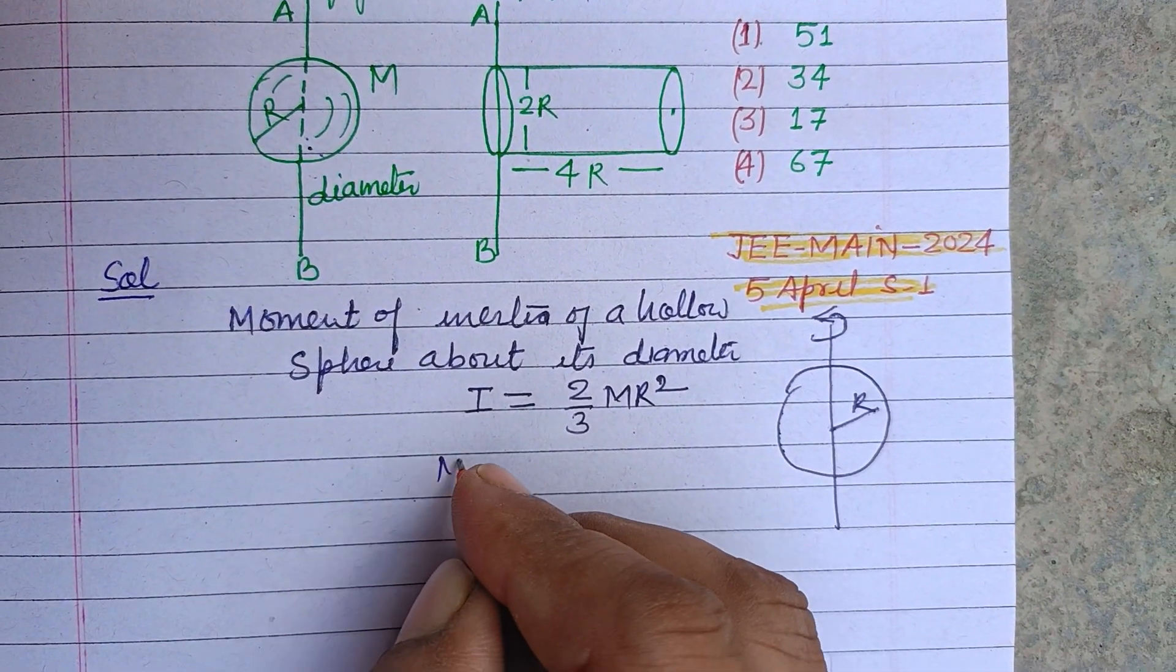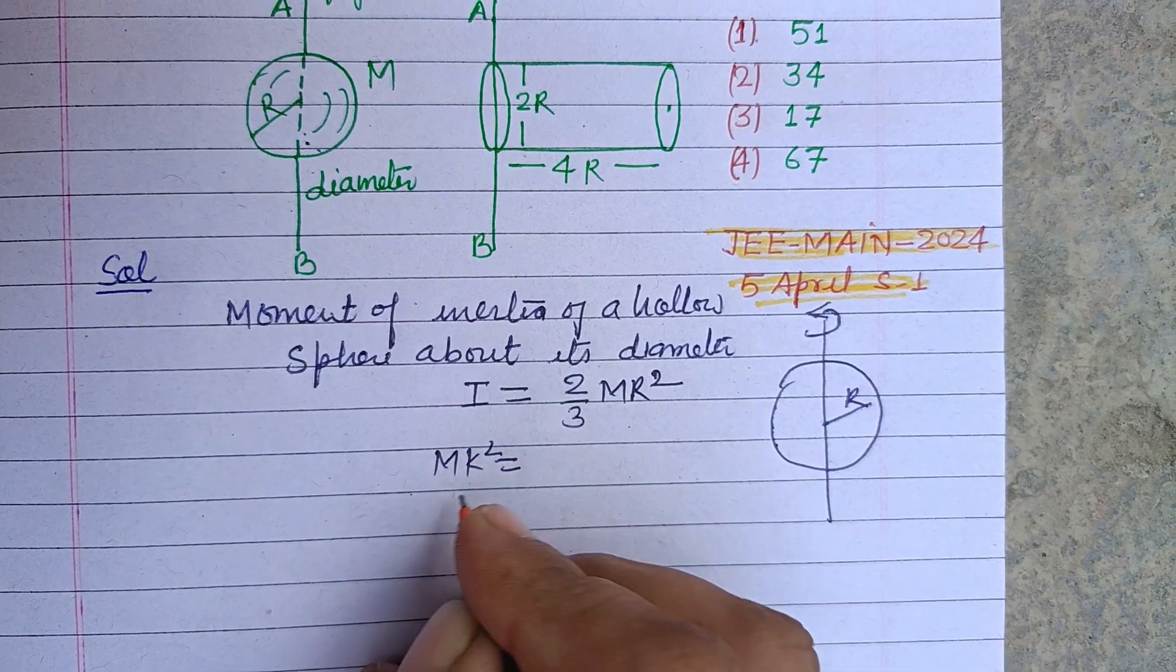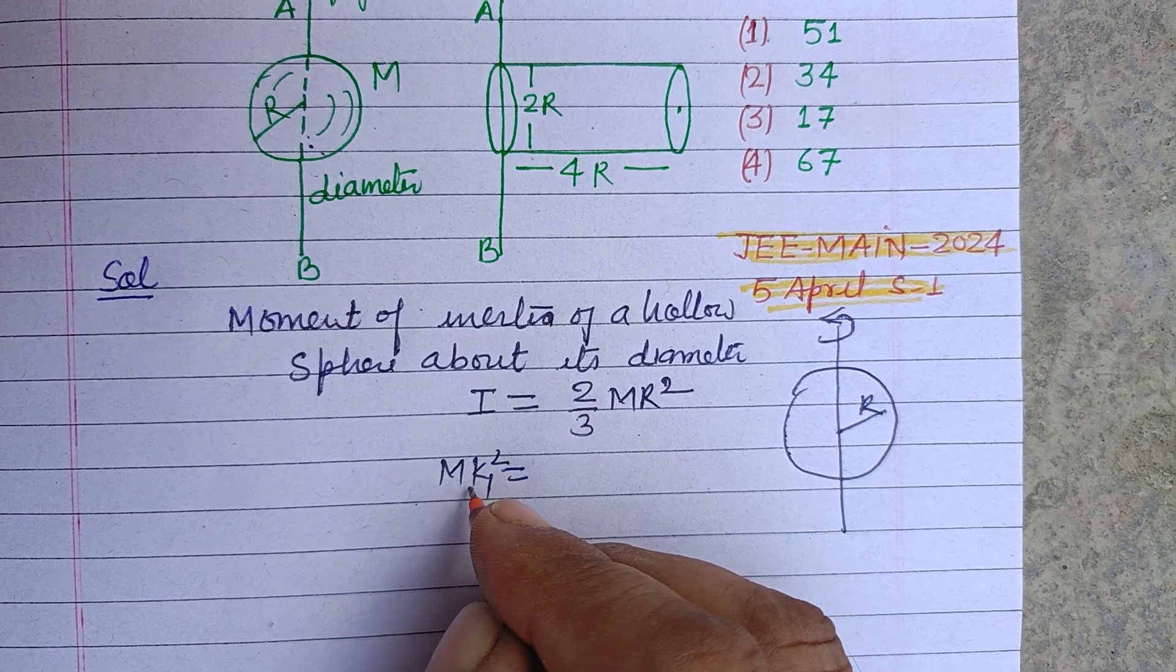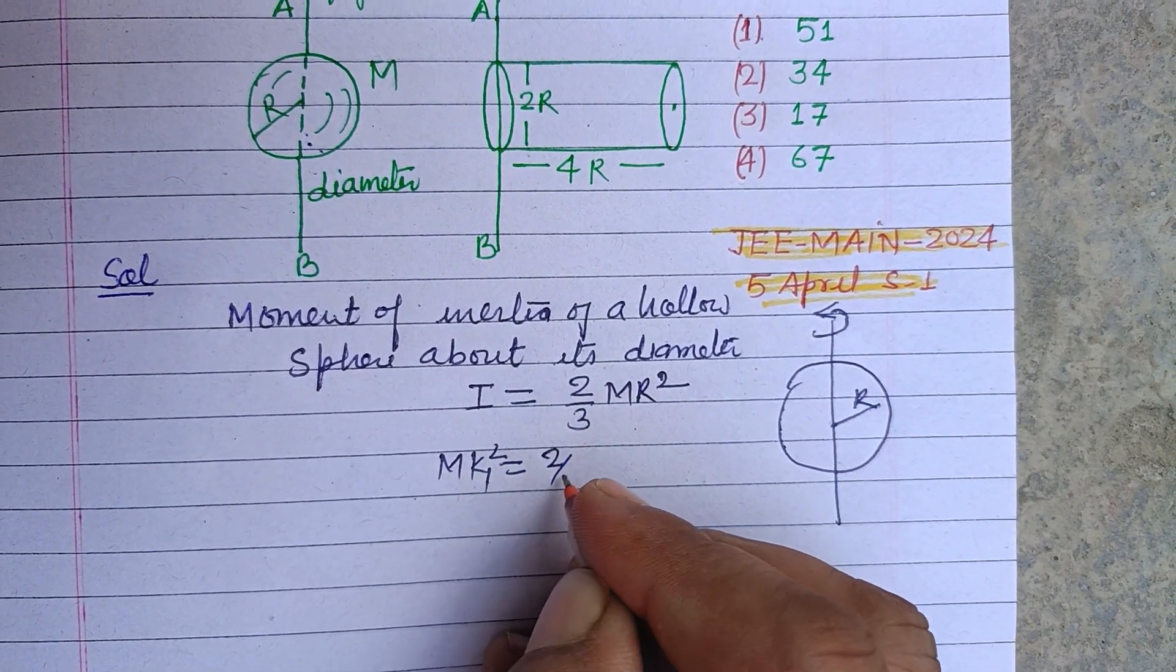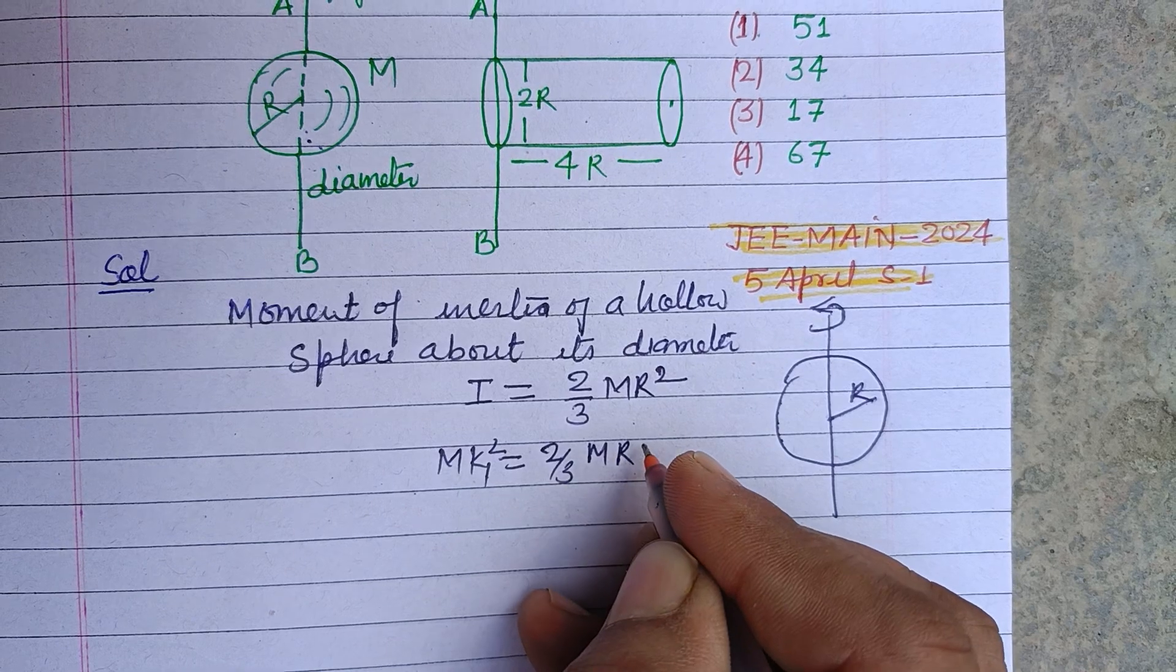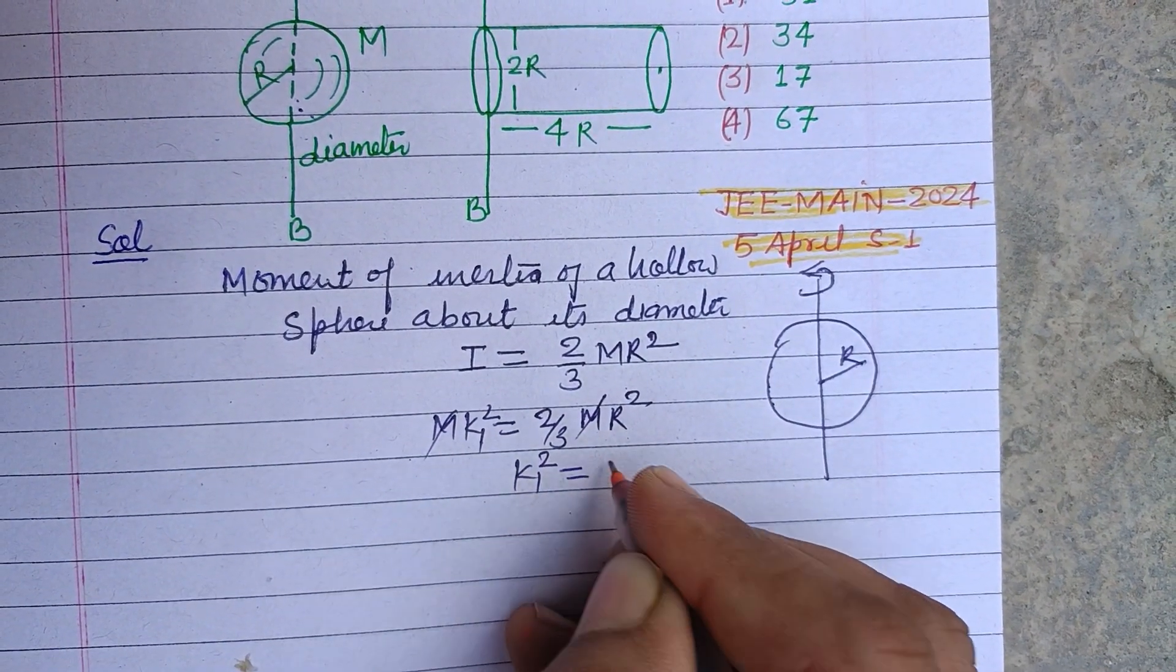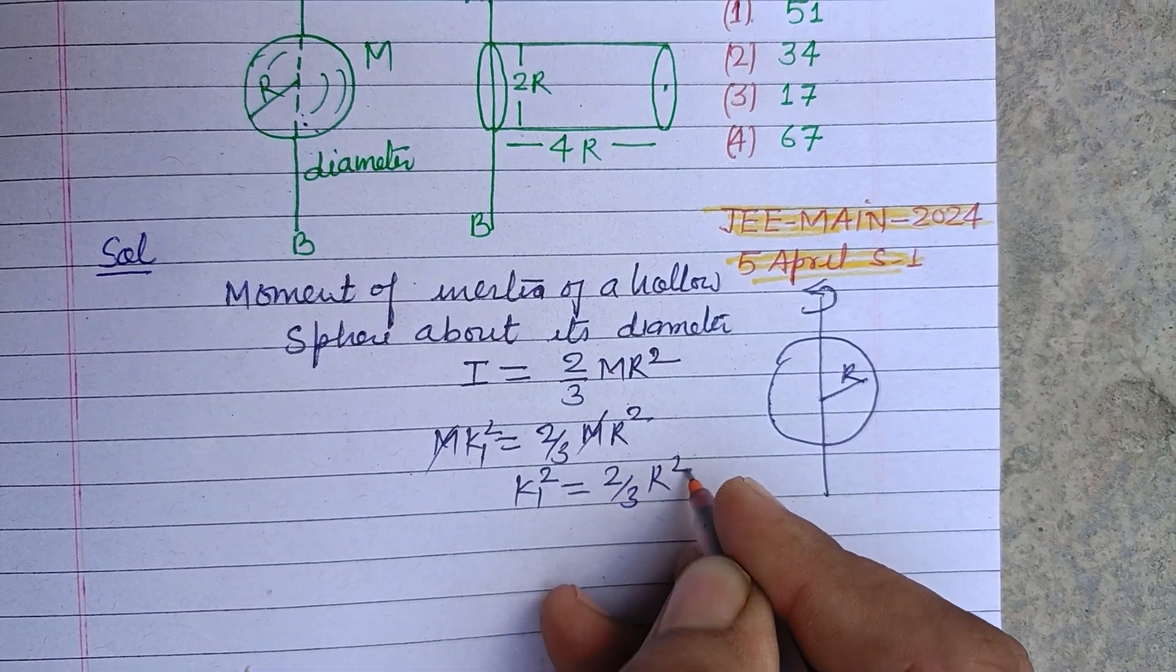If mk² is the radius of gyration of this sphere, then mk₁² equals 2/3 mR². m cancels, so k₁² equals 2/3 R².